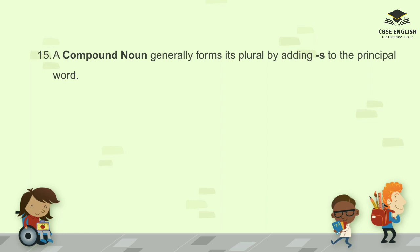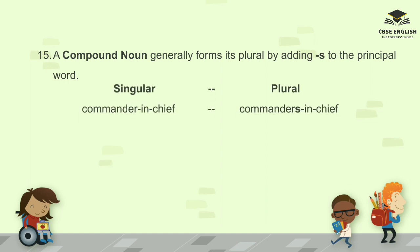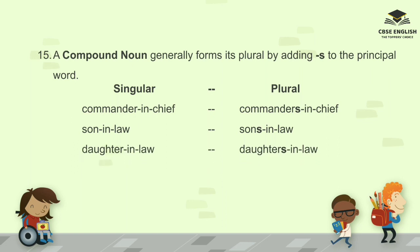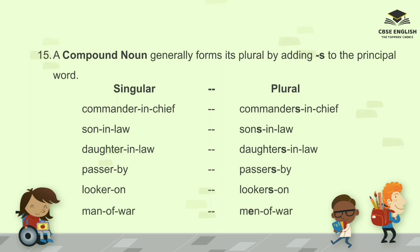A compound noun generally forms its plural by adding S to the principal word. For example: commander-in-chief — here 'commander' is the principal word, so S is added to it: commanders-in-chief. Further examples: sons-in-law, daughters-in-law, passers-by, lookers-on, men of war.